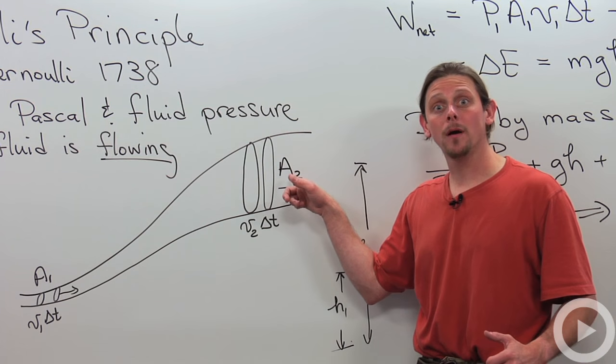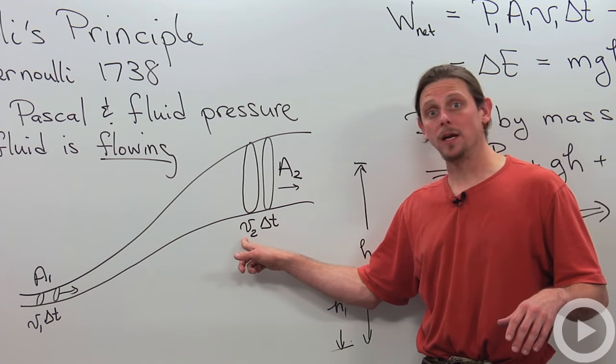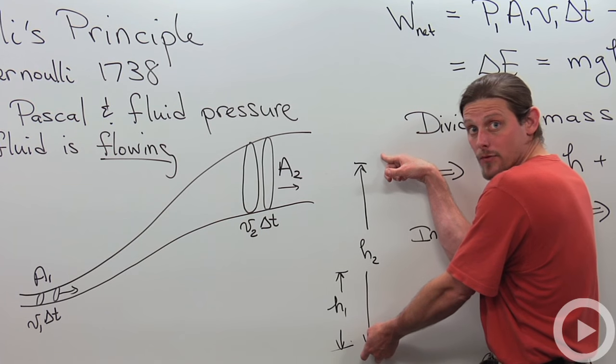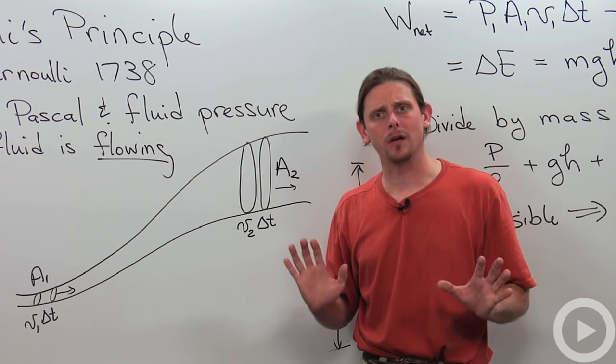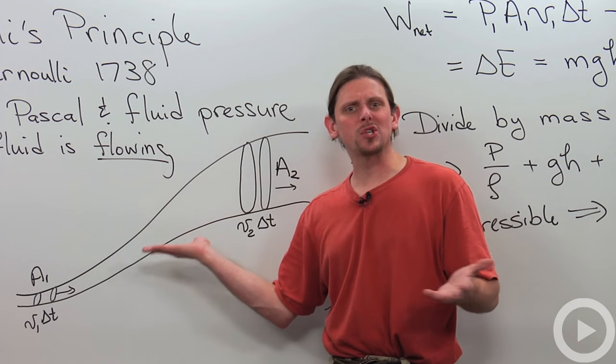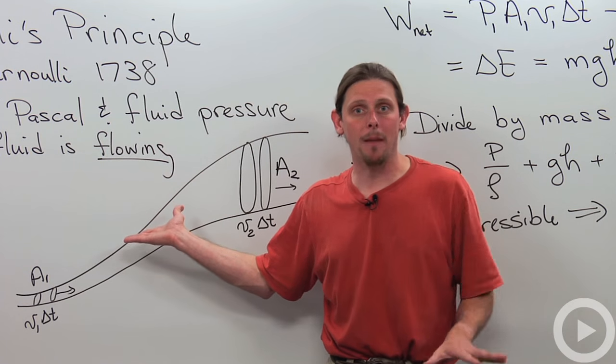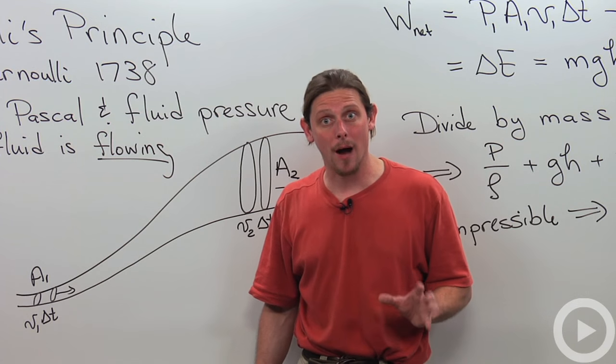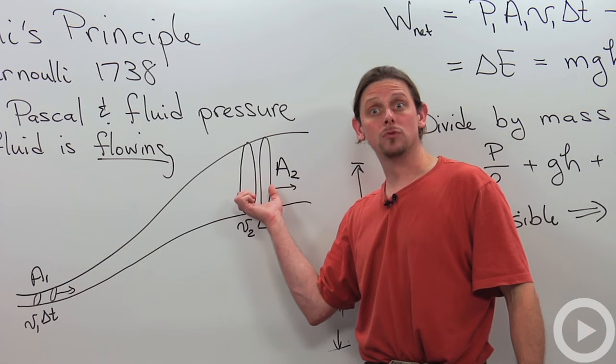Over here at the top we've got a much larger cross sectional area a2. We have another speed v2 and this fluid is at height h2 above the ground. Now we're going to apply conservation of energy to this situation. All the fluid in the middle has just stayed the same. The only effect of this time delta t was to move a piece of the fluid from over here to over here.